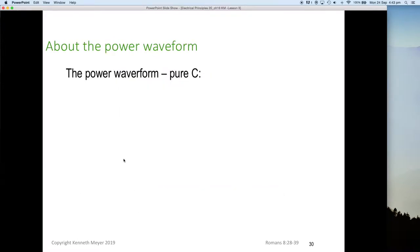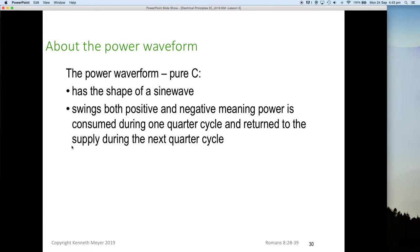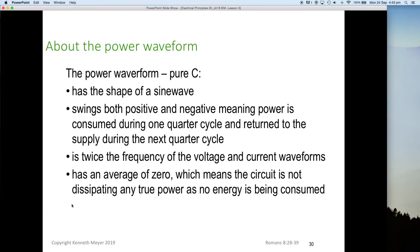So about the power waveform in a purely capacitive circuit. The power waveform has the same shape as a sine wave. The power waveform swings both positive and negative, meaning power is consumed during one quarter of a cycle and returned to the supply during the next quarter of a cycle. It's twice the frequency of the voltage waveforms. And the power waveform has an average of zero, which means that the circuit is not dissipating any true power, as no energy is being consumed. Energy is simply stored and released, causing this offset shift between voltage and current.